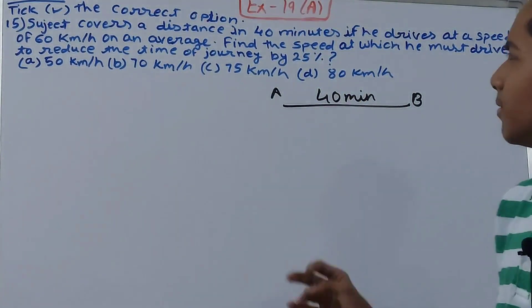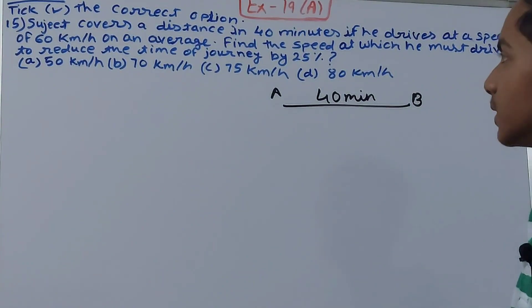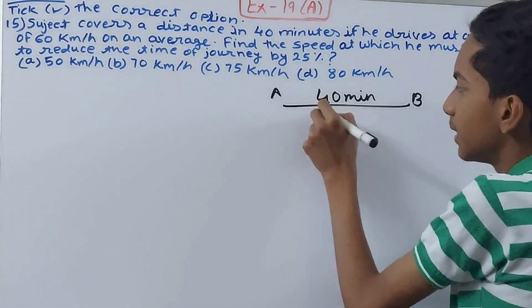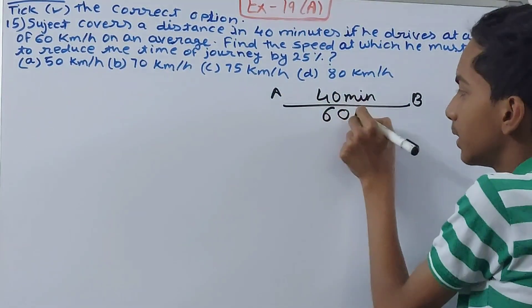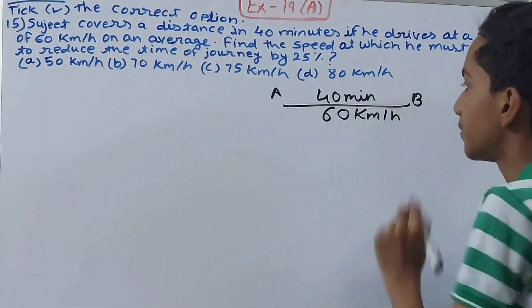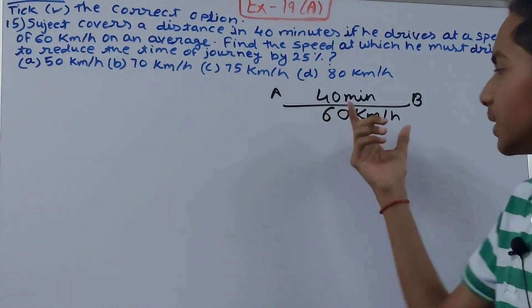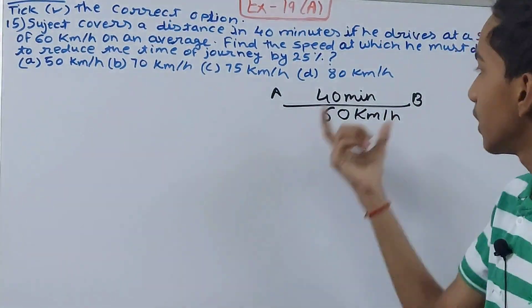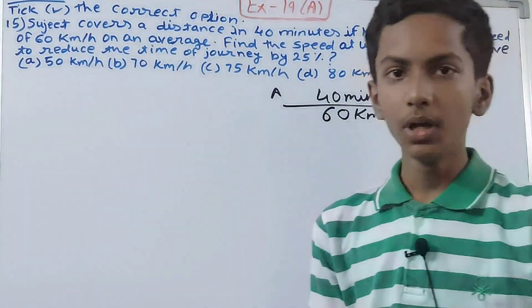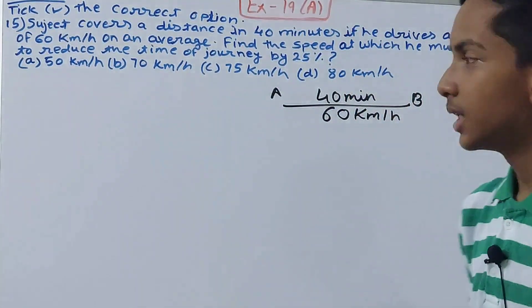It says if he drives at a speed of 60 km per hour, this is an average speed not the accurate one but it's average. If he goes at 60 km per hour he takes 40 minutes time to reach the destination.